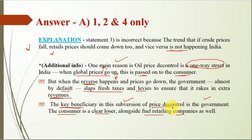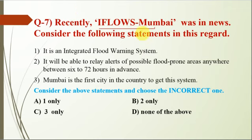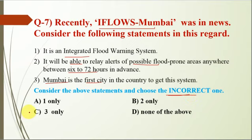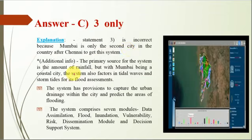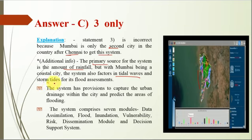Question number 7: iFlows Mumbai was recently in the news. Statement 1: it is an integrated flood warning system. Statement 2: it can relay alerts of possible flood-prone areas anywhere between 6 to 72 hours in advance. Statement 3: Mumbai is the first city in the country to get this system. The correct option is C — statement 3 is incorrect, as Mumbai is only the second city after Chennai to get this system. The primary source for the system is rainfall data, but since Mumbai is a coastal city, the system also factors in tidal waves and storm surges. The system has provisions to capture urban drainage and predict flood areas, and comprises seven modules.